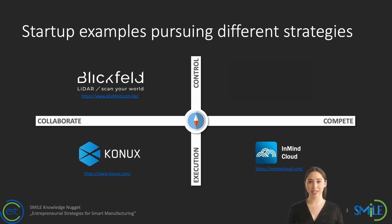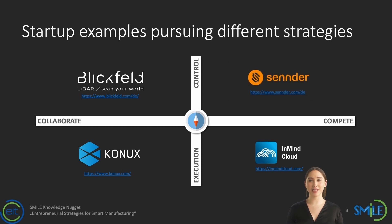The startup Conox is a perfect example of following a value chain strategy. Conox offers industrial Internet of Things solutions that combine smart sensors, data fusion, and advanced AI-based analytics. Conox has specialized in the railway operations industry, collaborating closely with incumbent firms. This enables Conox to develop highly customized solutions that allow railway operators to predict failures and identify maintenance needs in complex infrastructures early on.